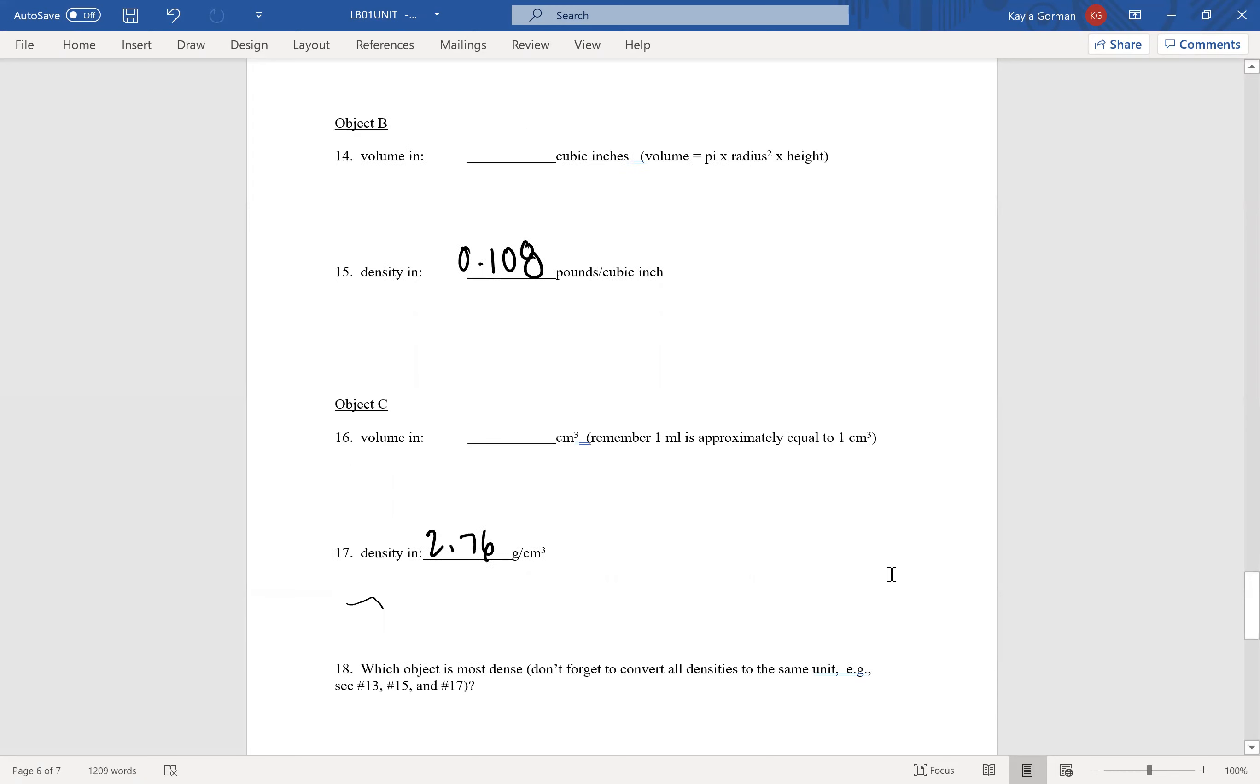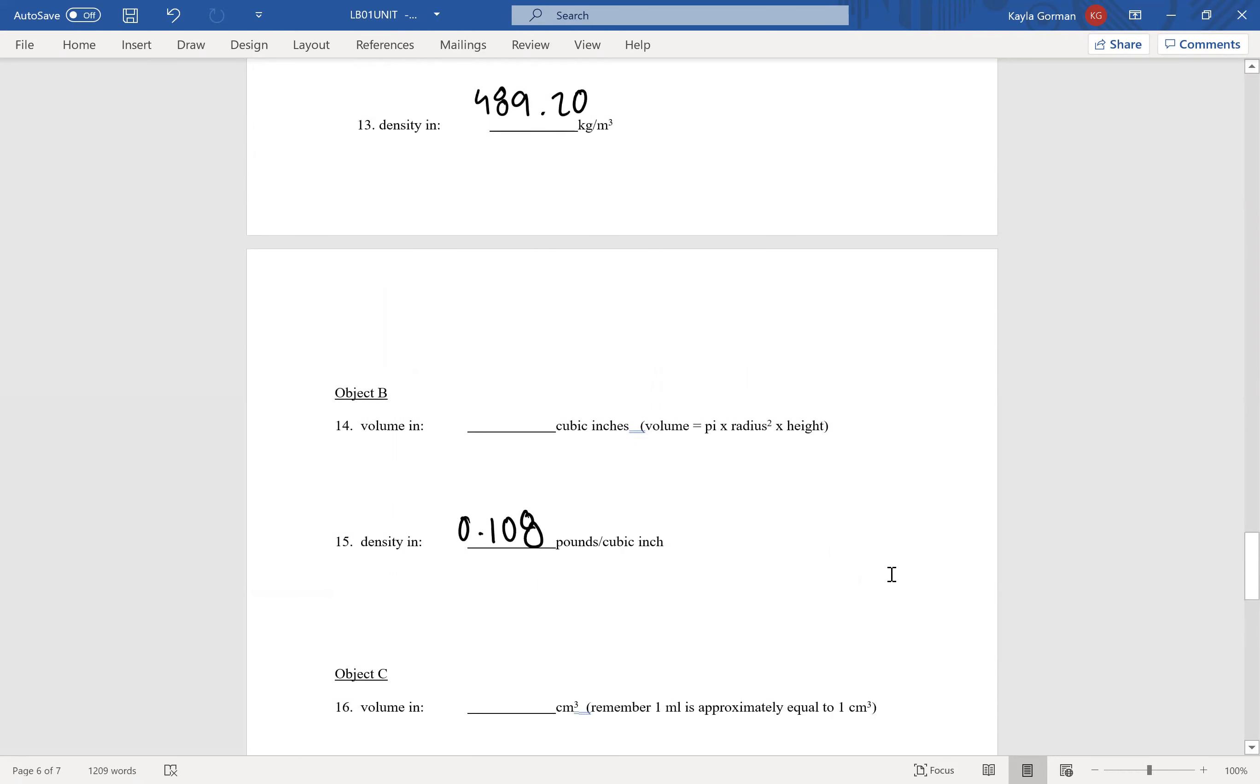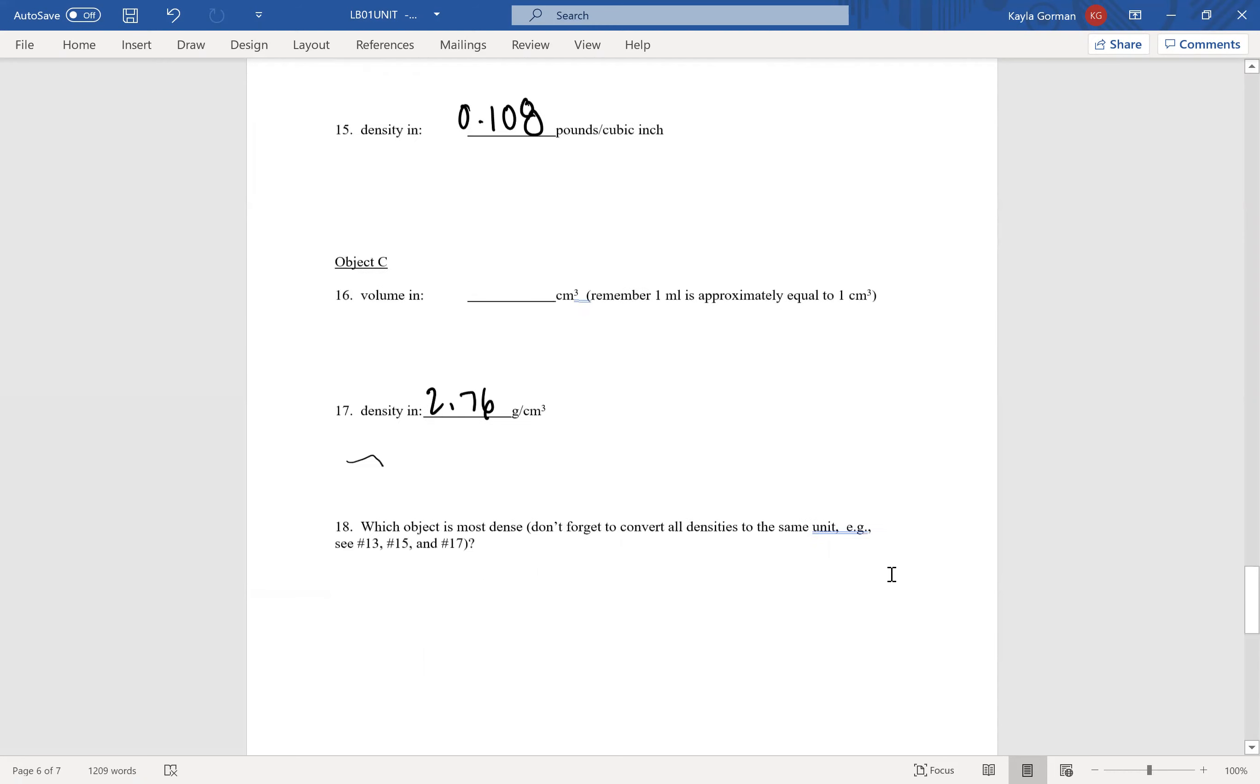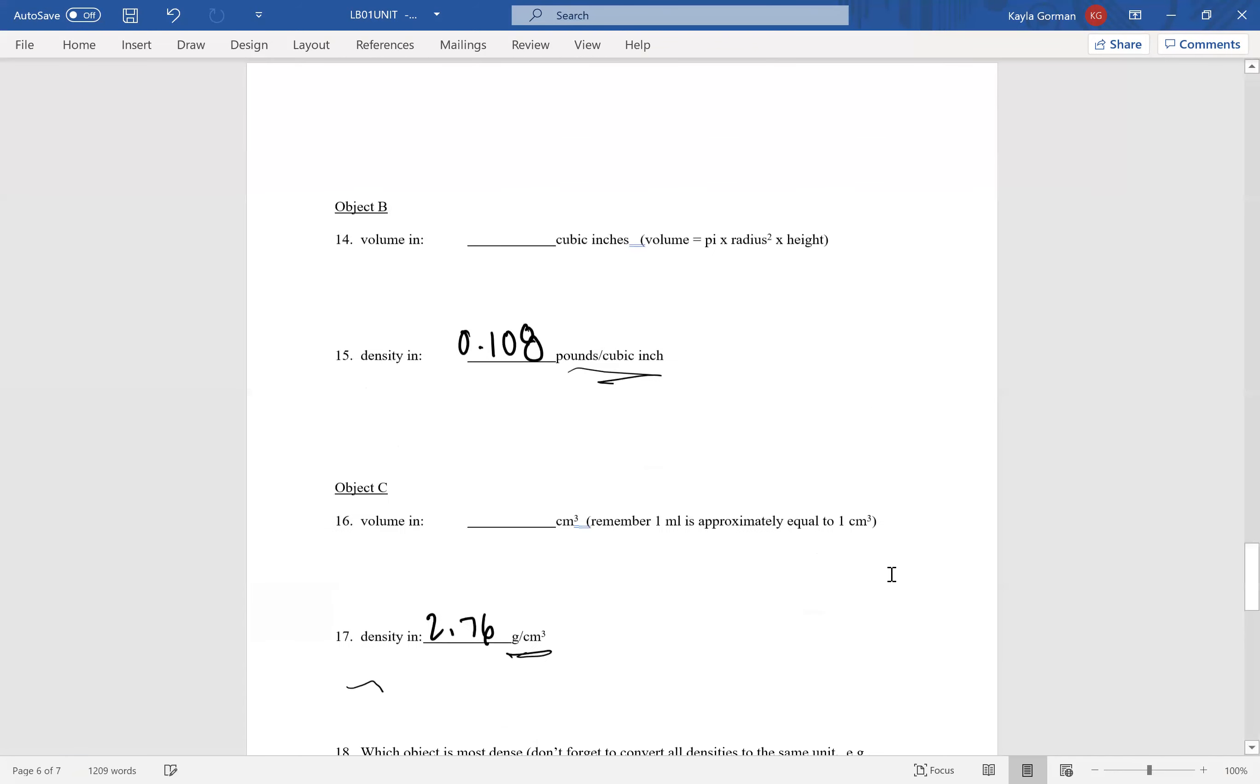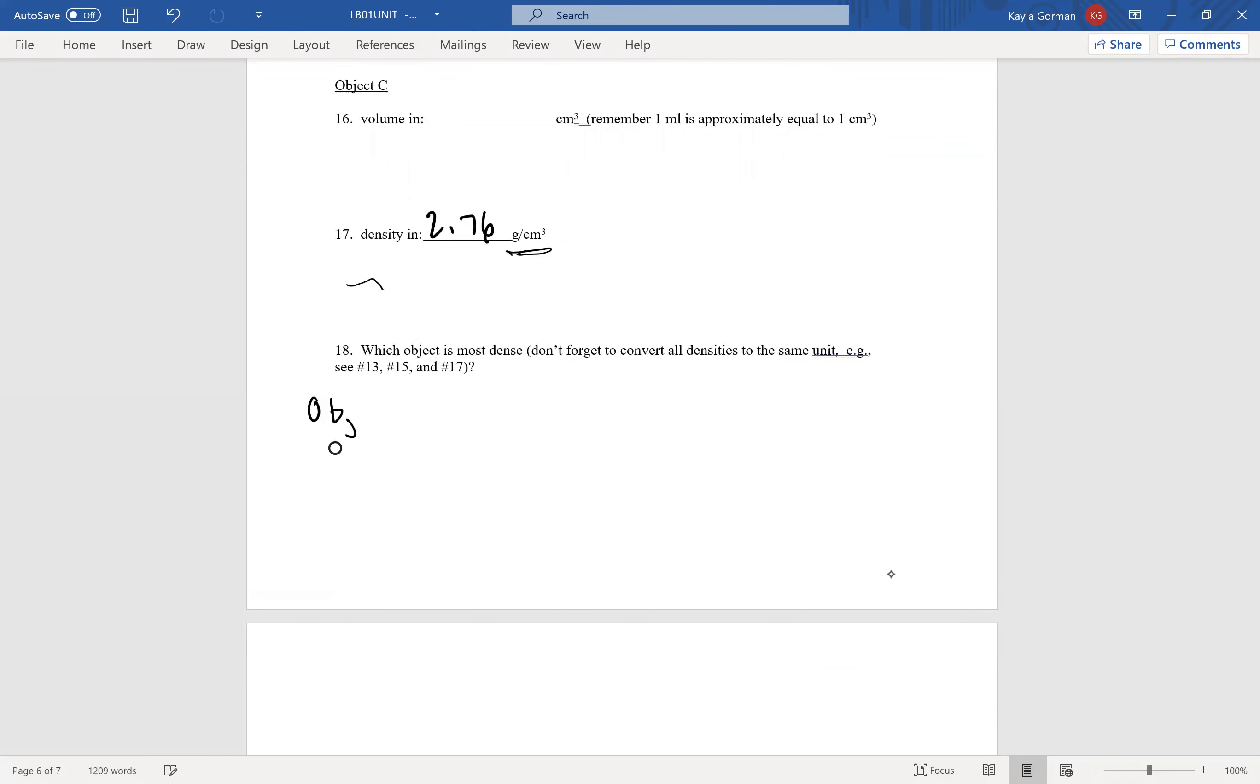So we have these three densities. Problem is they're all in different units. We have kilograms per meters cubed, we have pounds per cubic inch, and we have grams per centimeter cubed. So now we got to think about which unit do we want to switch them all to. Which one do we want to keep and which one do we want to switch them all to? For convenience sake I am going to keep Object C.